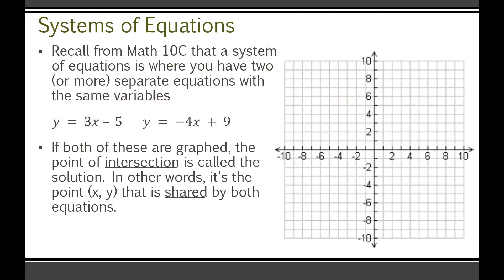Recall from Math 10c that a system of equations is where you have two or more separate equations with the same variables. For example, we could have y = 3x − 5 and y = −4x + 9. If both of these are graphed, the point of intersection is called the solution — in other words, it's the coordinate (x, y) that is shared by both equations.